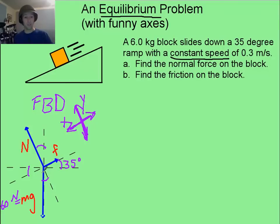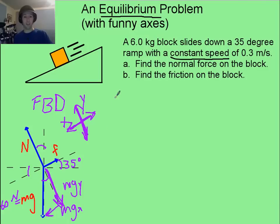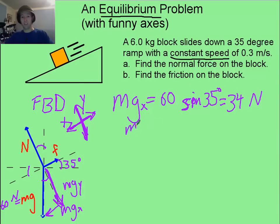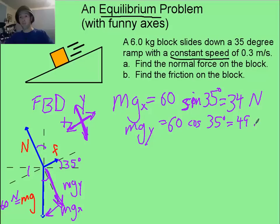Now you only need to break one force into components. You need to find the component of weight along the slope — mg sub x — and the component perpendicular to the slope — mg sub y. Using a little bit of trig: mg sub x is the smaller one, equal to 60 sine of 35 degrees, which turns out to be 34 Newtons. And mg sub y equals 60 cosine of 35 degrees, which equals the larger 49 Newtons.